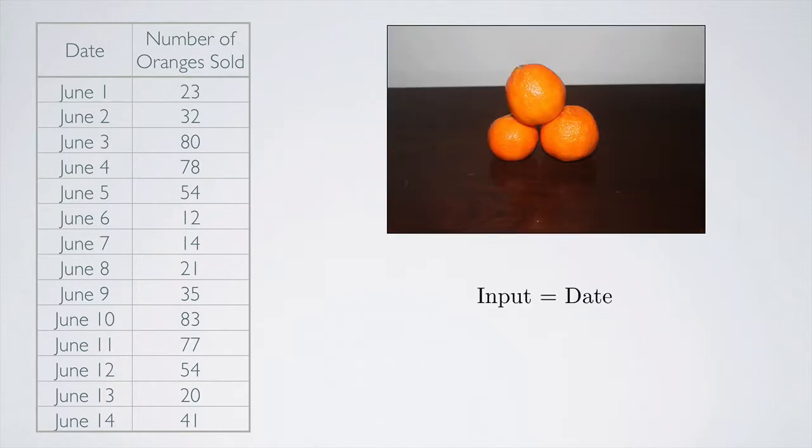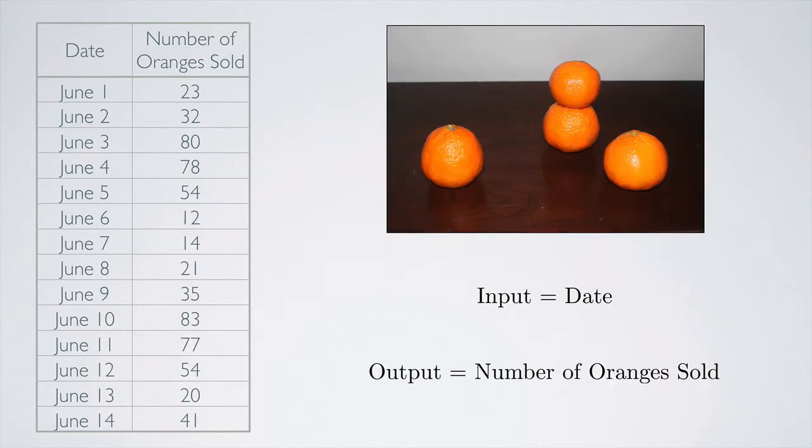We can think of the input as the date and the output as the number of oranges sold. In other words, the number of oranges sold is a function of the date. Given a date, you can tell me how many oranges were sold on that date. This is one example of a function.